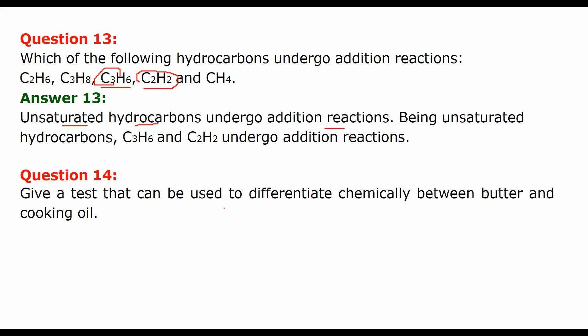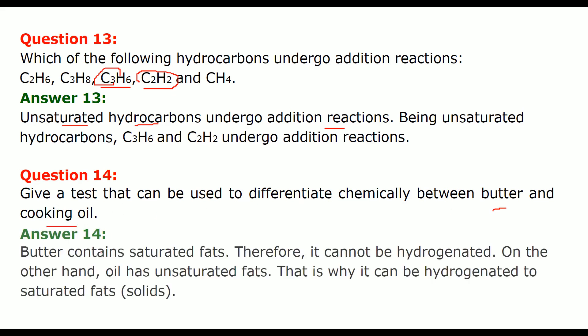Give a test that can be used to differentiate chemically between butter and cooking oil. See, butter contains saturated fats. So, it cannot be hydrogenated. On the other hand, if you talk about oil, they have unsaturated fats. That is why it can be hydrogenated to saturated fats. Solids.